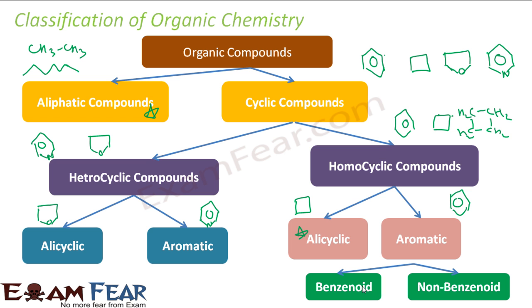Aromatic homocyclic compounds can be further classified as benzoid and non-benzoid. To summarize the overview: organic compounds split into aliphatic and cyclic; cyclic splits into homocyclic (only carbon in the ring) and heterocyclic (non-carbon atoms in the ring); homocyclic splits into alicyclic and aromatic; and aromatic splits into benzoid and non-benzoid. Heterocyclic also splits into alicyclic and aromatic.